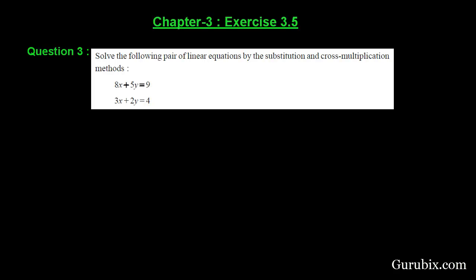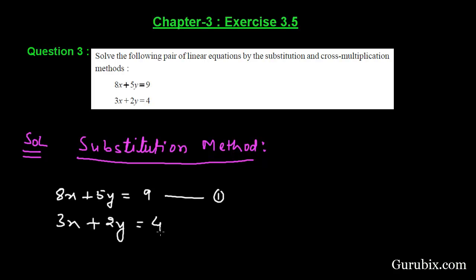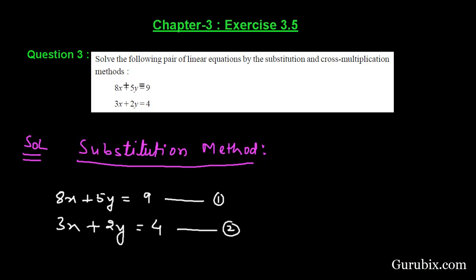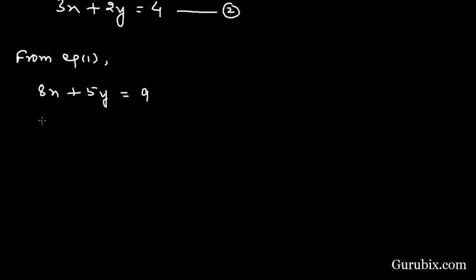Let us start solving this question first by the substitution method. We collect the given linear equations. The first equation is 8x + 5y = 9, this is equation number one. The second equation is 3x + 2y = 4, this is equation number two. Starting with equation one, we write the value of x in terms of y: 8x = 9 - 5y, so x = (9 - 5y) / 8.